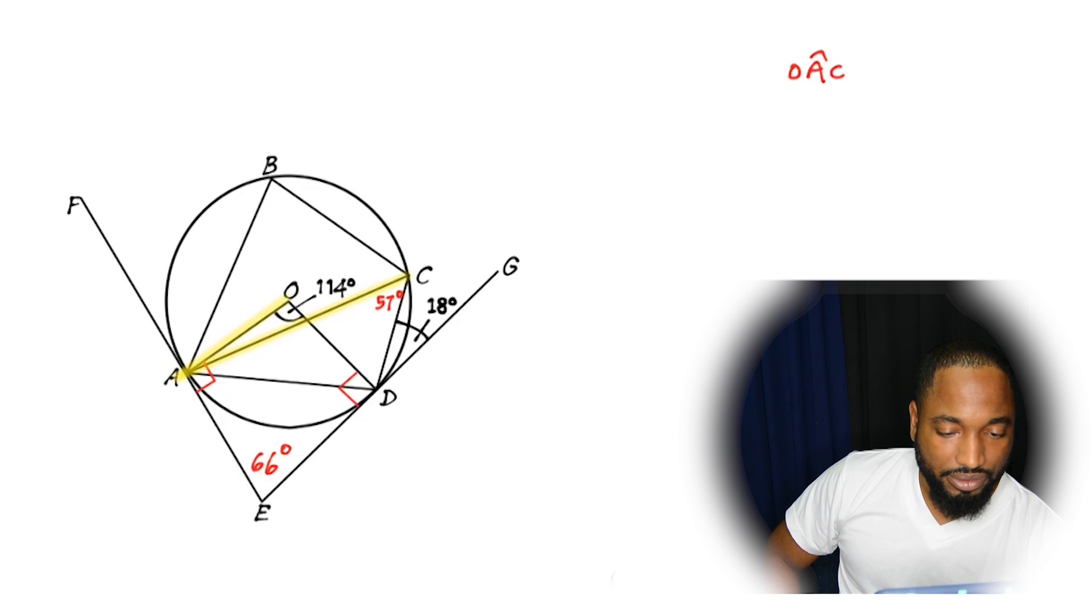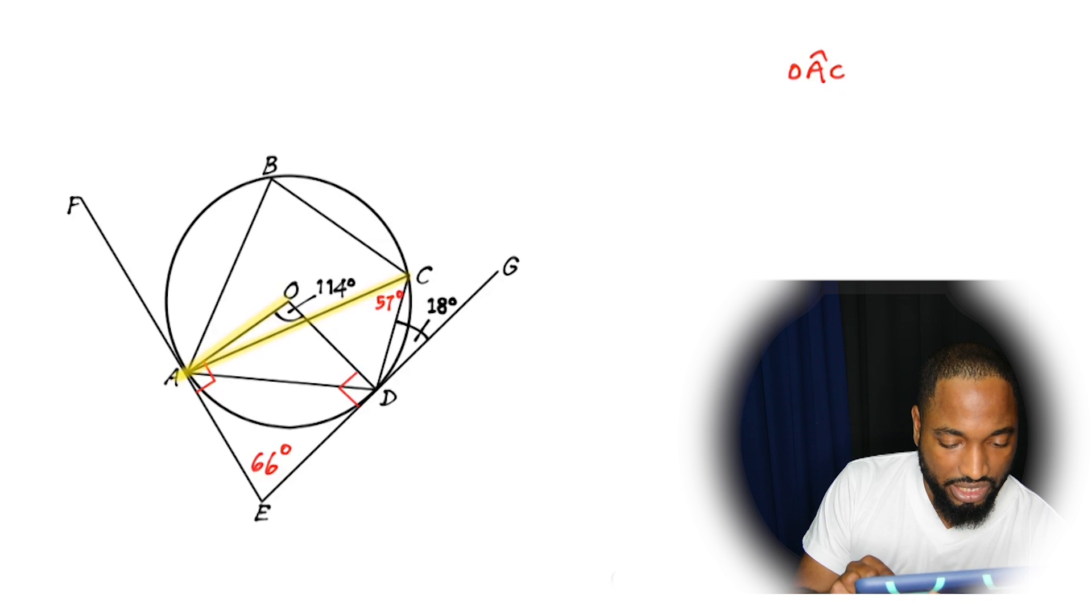So we had to find angle OAC. OAC is there. That's a small tiny angle. So let's see what we can think of. Got it. Angle OAC is part of this 90 degrees angle here, right? So there's this tiny piece here, there's this piece, and then there's angle OAC there. So now we just need to find out the two other angles, and take it from 90 degrees.